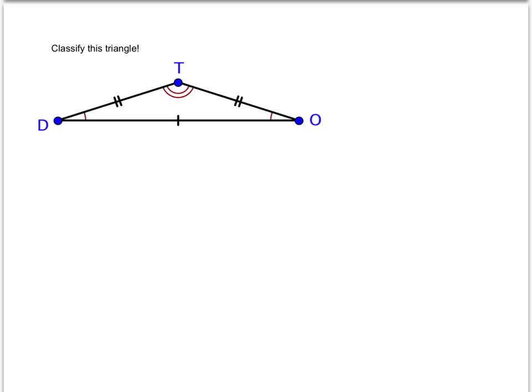How about this one? Make sure you recognize these congruence marks. This triangle is isosceles and obtuse.